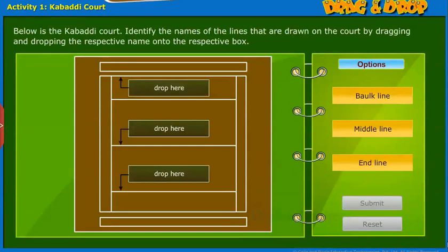Let us first perform an activity of identifying the lines on a Kabaddi court diagram. Below is the court diagram. Identify the names of the lines that are drawn on the court by dragging and dropping the respective name onto the respective box.